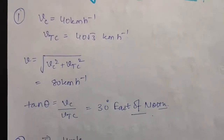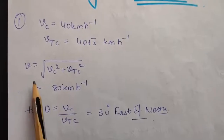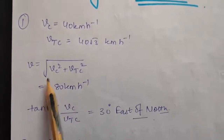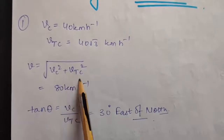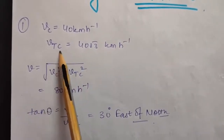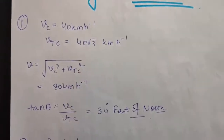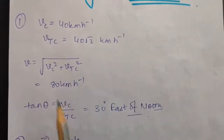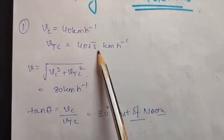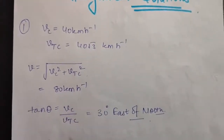To calculate actual velocity we will be using the resultant formula that is under root of vc² plus vtc², because as you know vtc will be nothing but vt minus vc — that is in vector form. So when you calculate the magnitude you will get this formula. Just put in their values and solve it; you will get 80 km per hour.